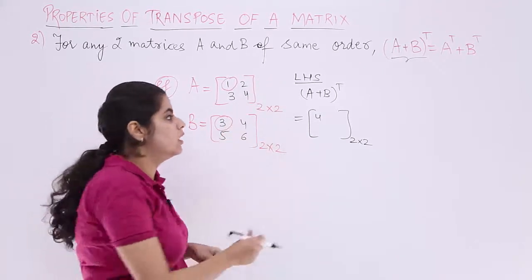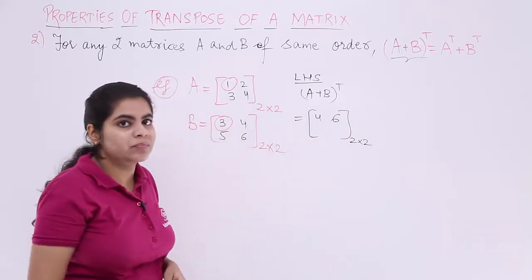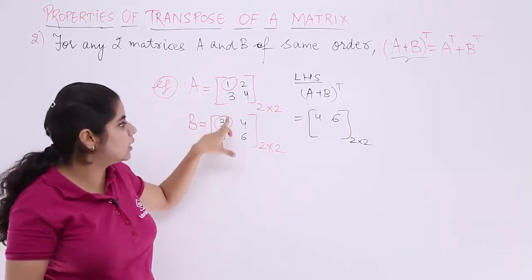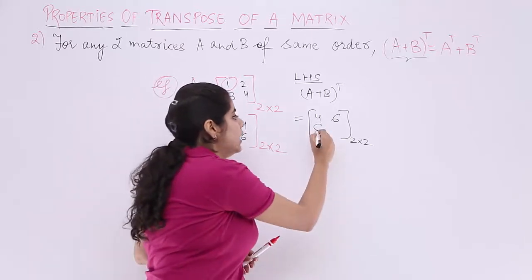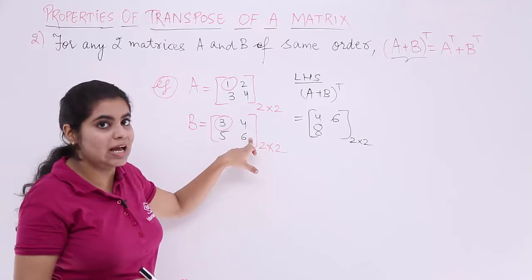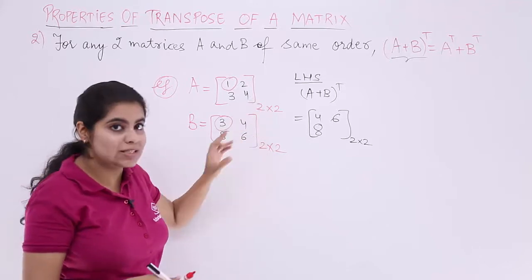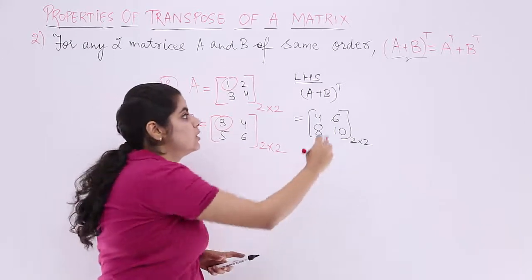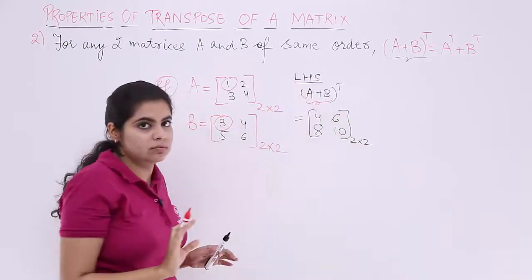2 plus 4 is 6. Moving downwards, 3 plus 5. 3 plus 5 is 8. Last but not the least, I have 4 plus 6, which is 10. So this is basically what we have computed, only A plus B till now.